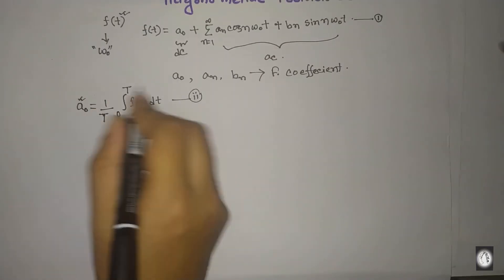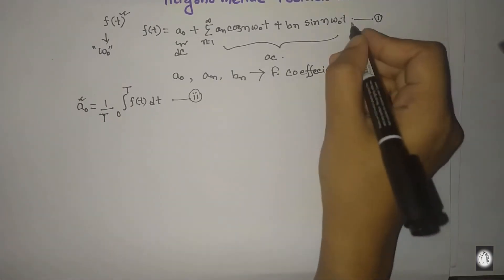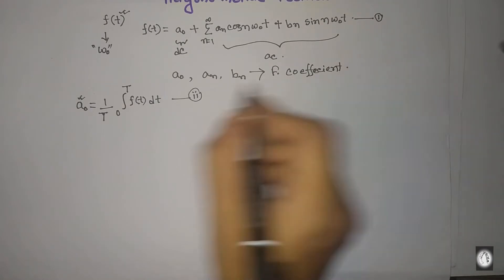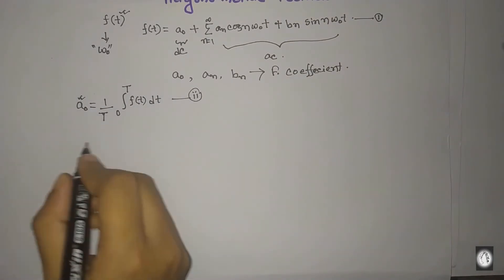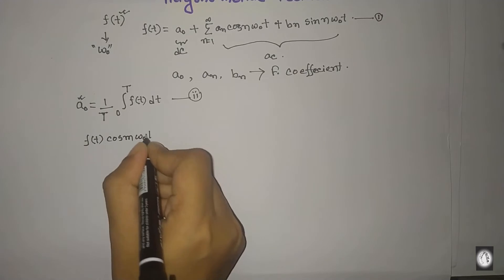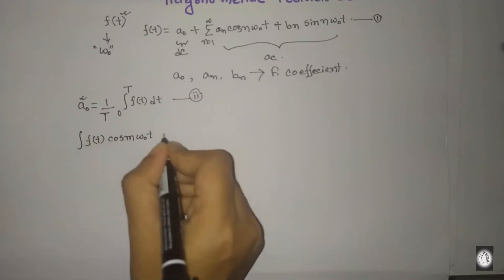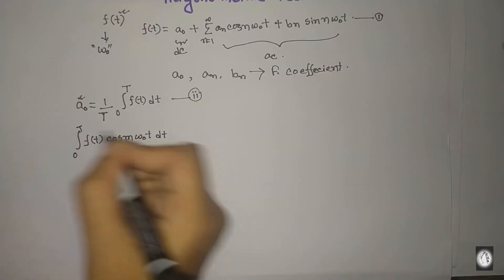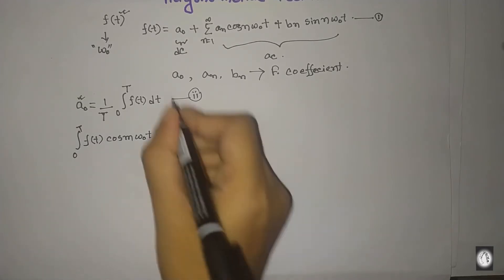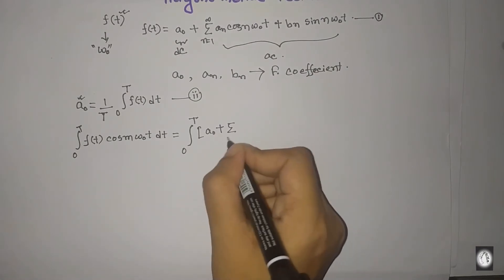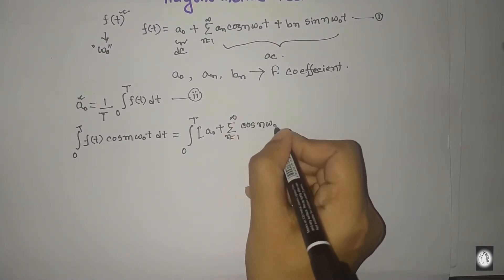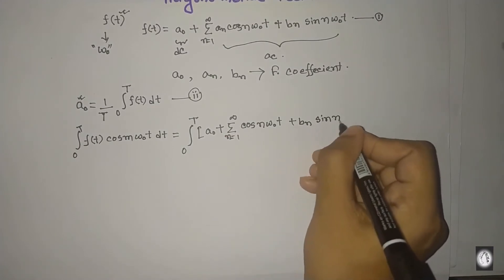This is the AC component equation. We multiply both sides by cos(mω₀t). The right-hand side becomes an integration from 0 to T of the series: summation from n=1 to infinity of [a_n cos(nω₀t) plus b_n sin(nω₀t)] times cos(mω₀t).